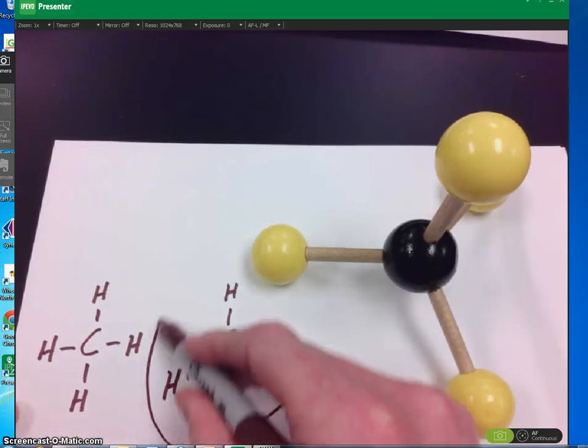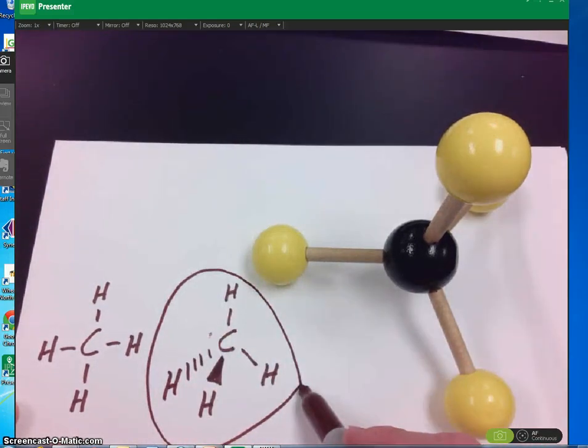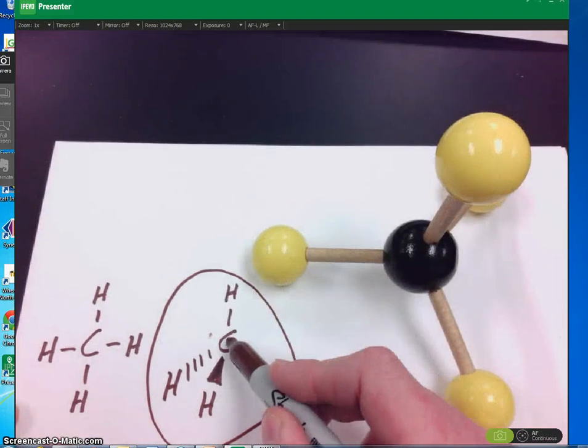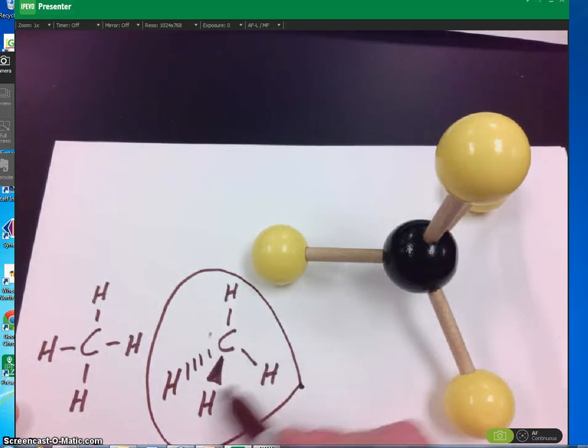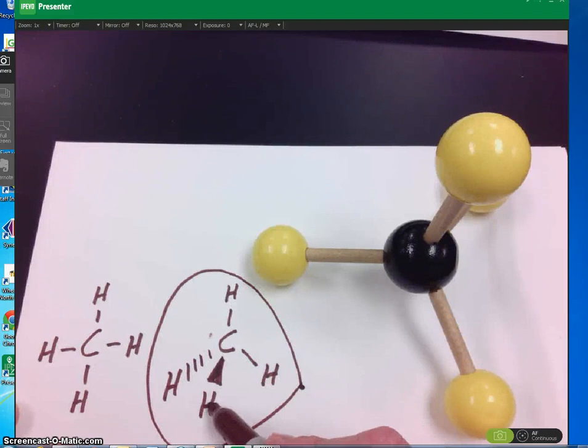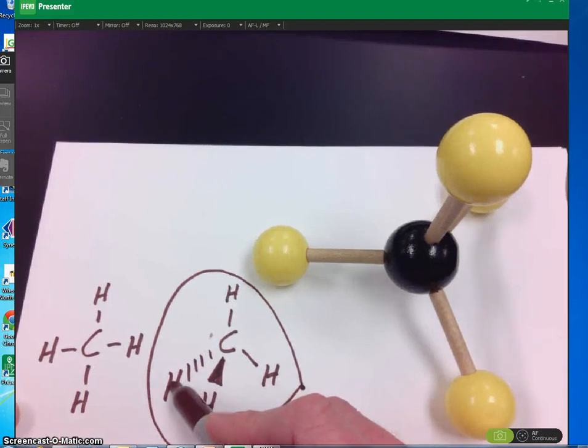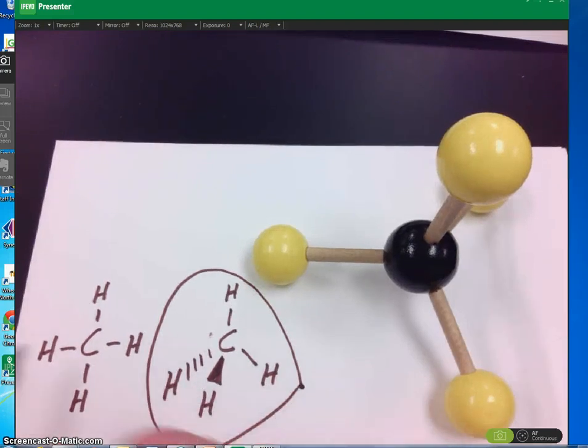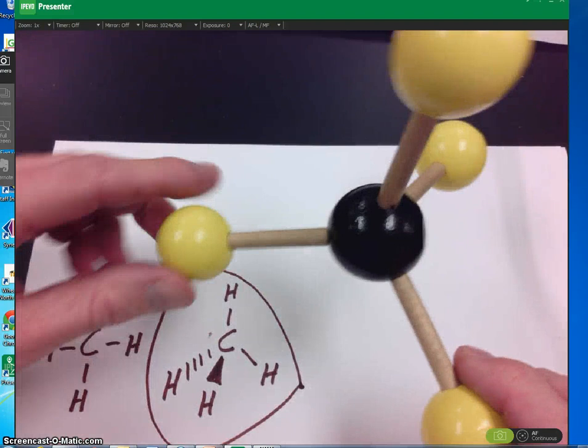So this is the VSEPR structure for methane. These three are in the same plane. This one is projecting towards you, and this one is projecting away from you.